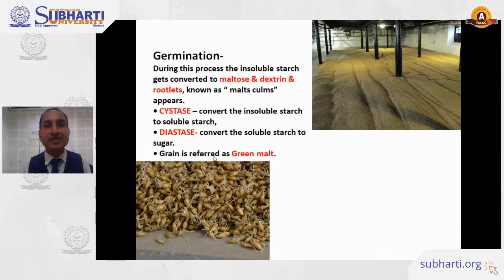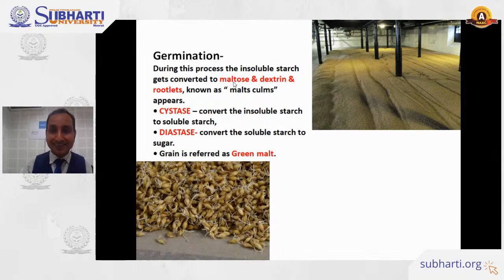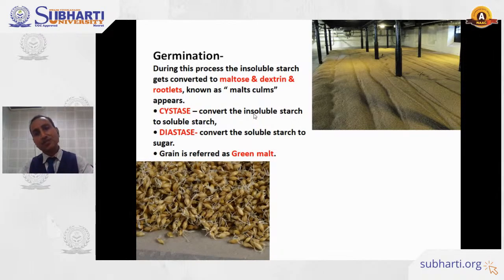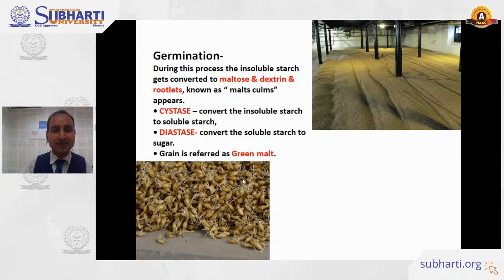After malting, germination takes place. The grains start germinating. Chemically, the insoluble starch inside begins breaking down and changes into maltose, dextrin, and rootlets — collectively called malt scum. The enzymes cytase and diastase act: cytase converts insoluble starch into soluble starch, and diastase converts the soluble starch into simpler sugars. The end product is germinated green malt.